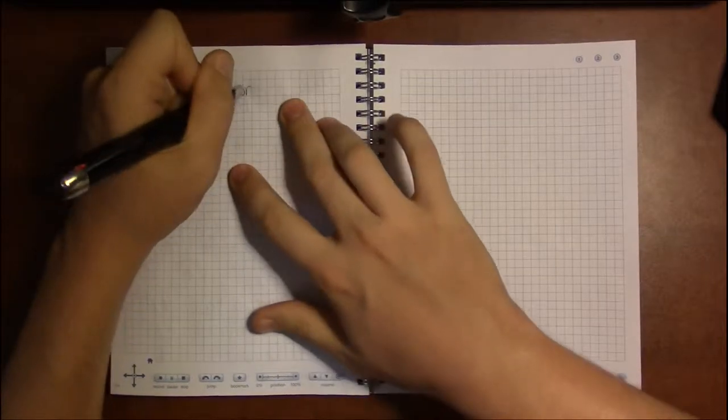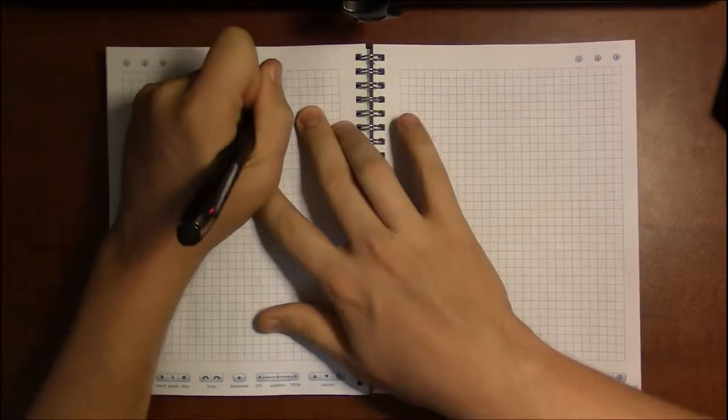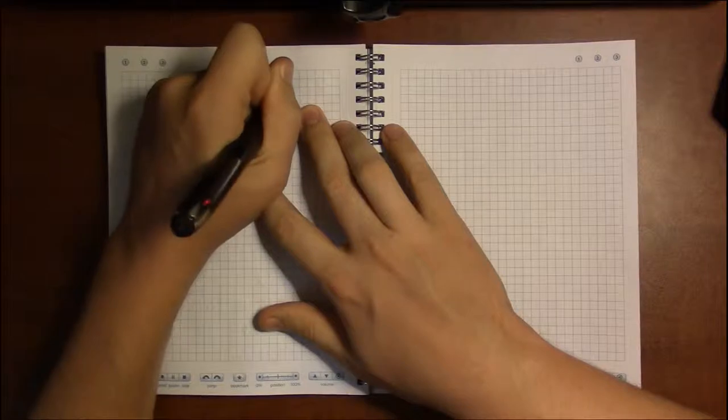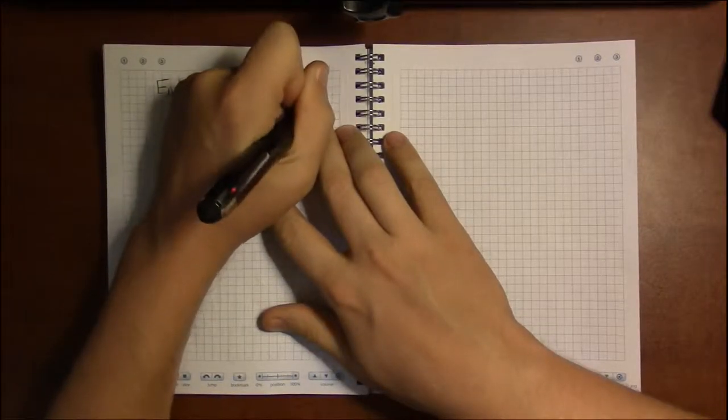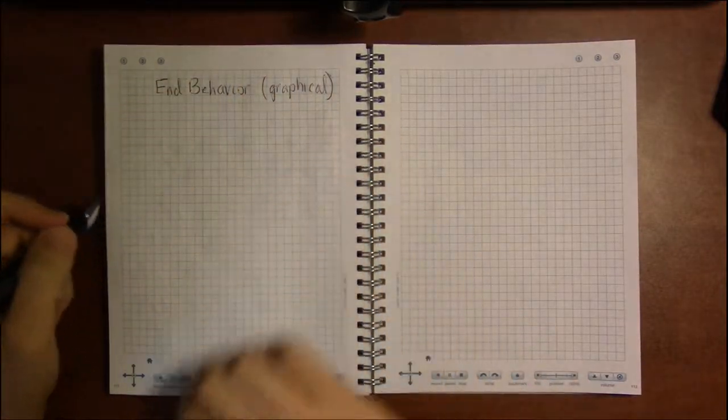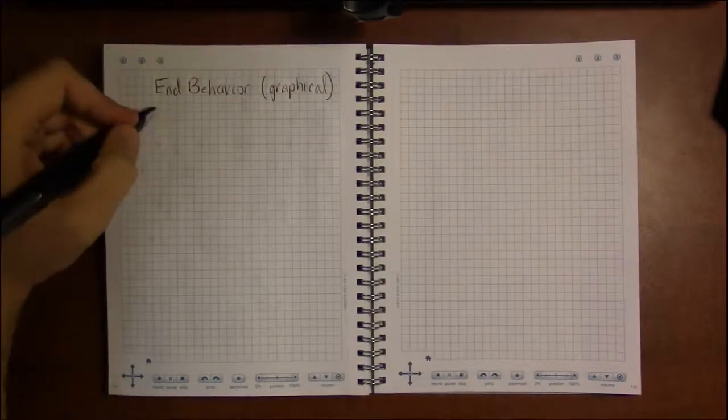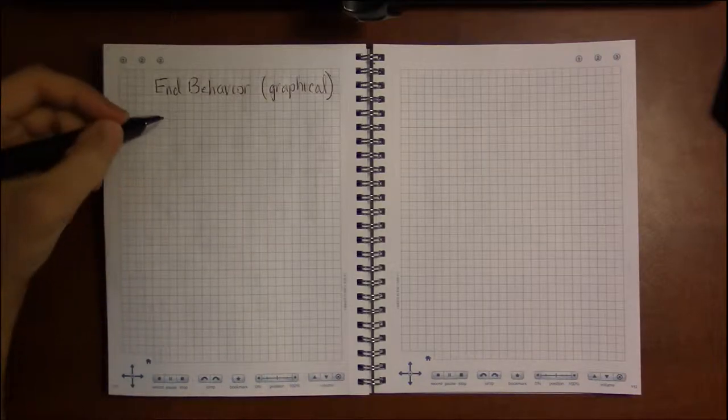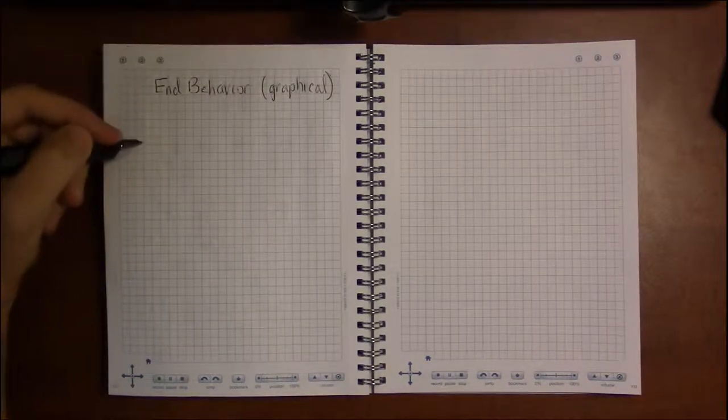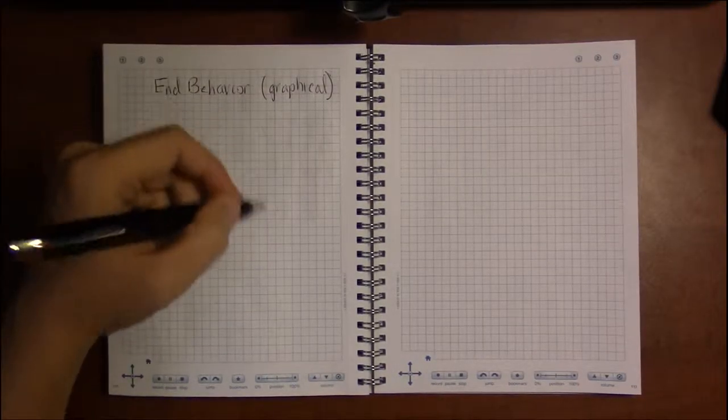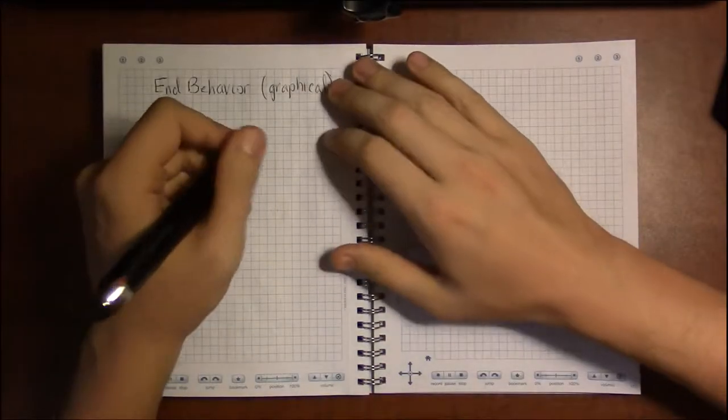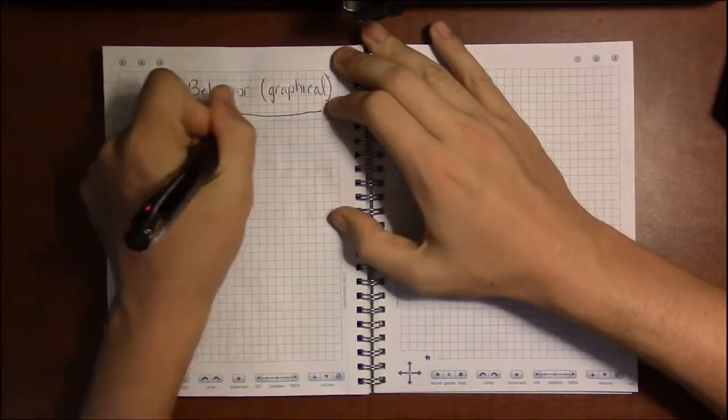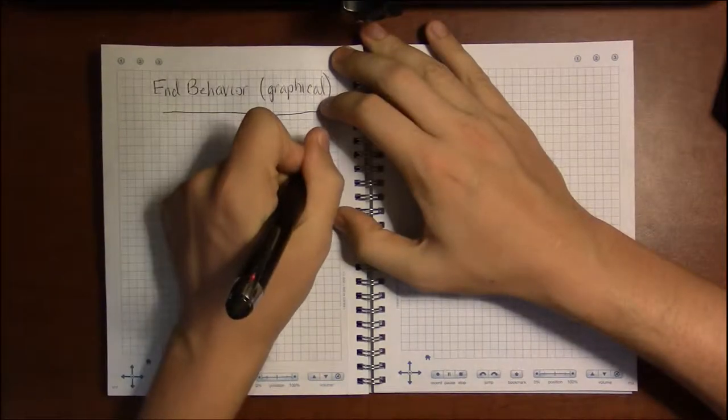So when we're talking about end behavior, we're talking about the graphical characteristics of a polynomial. Now, polynomials are just kind of wavy lines that go either up or down on the left and right-hand ends. So let's do a little table here.